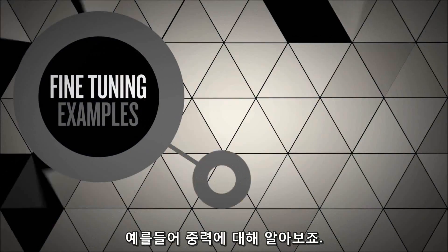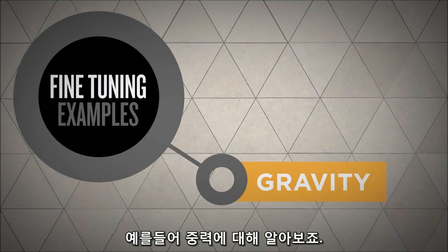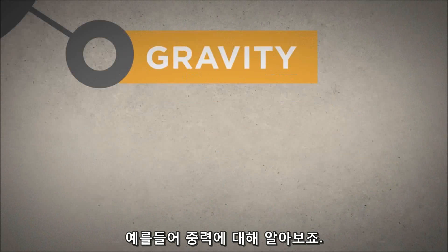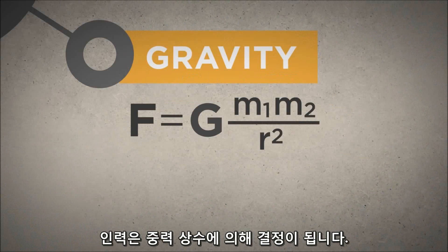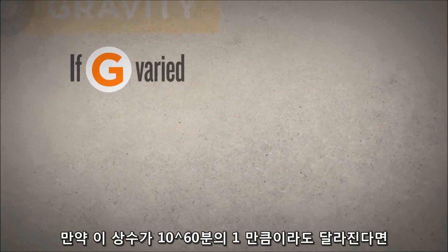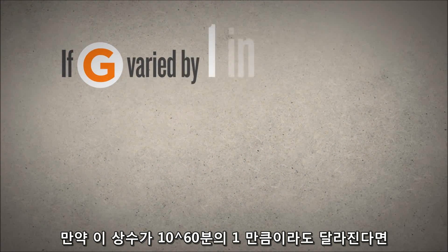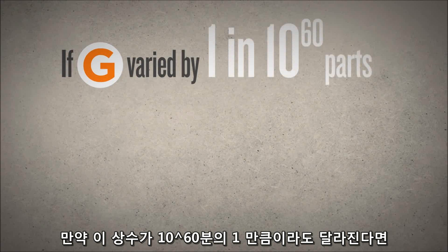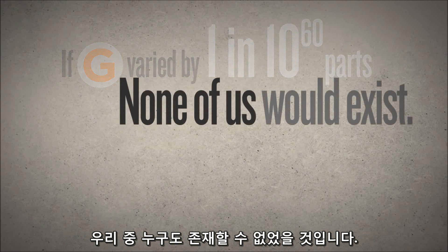Consider gravity, for example. The force of gravity is determined by the gravitational constant. If this constant varied by just 1 in 10 to the 60th parts, none of us would exist.